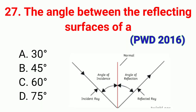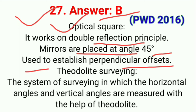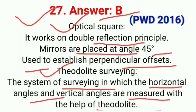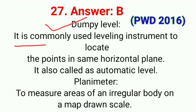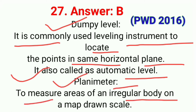Question number twenty-seven: The angle between the reflecting surfaces in an optical square is. The correct answer is option B, 45 degrees. An optical square works on the double reflection principle; mirrors are placed at an angle of 45 degrees and it is used to establish perpendicular offsets. A dumpy level is a commonly used leveling instrument to locate points in the same horizontal plane, also called an automatic level. A planimeter is used to measure areas of irregular figures on a map.